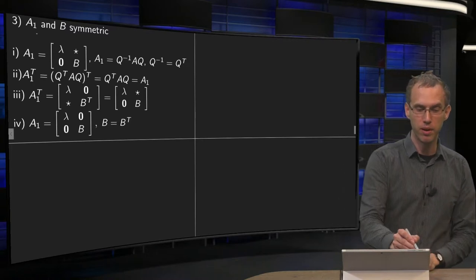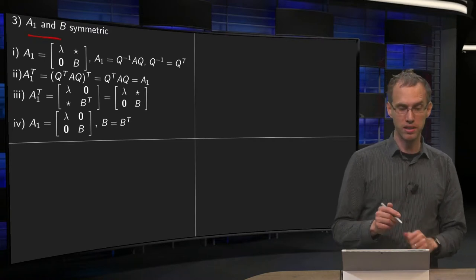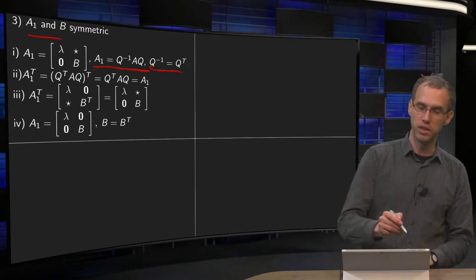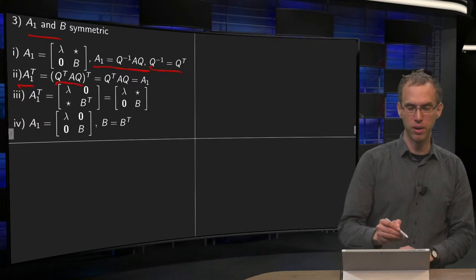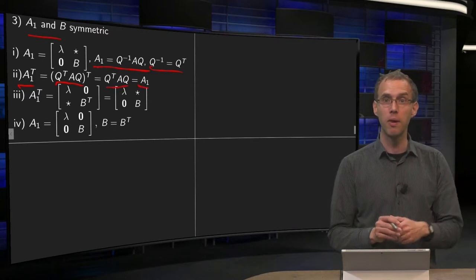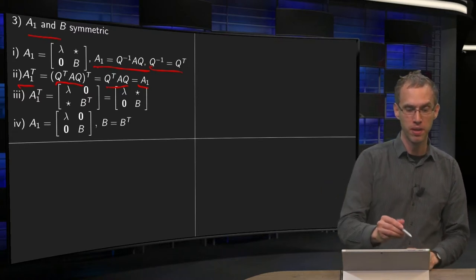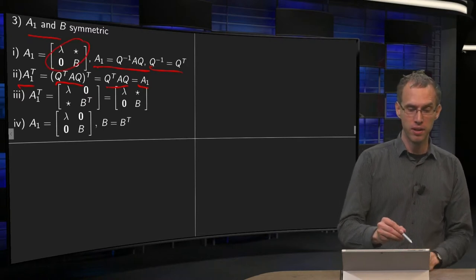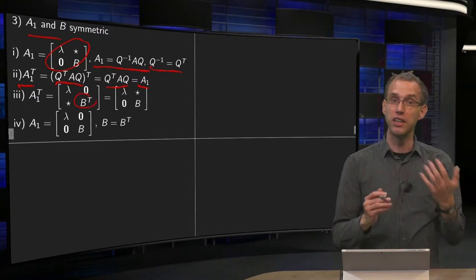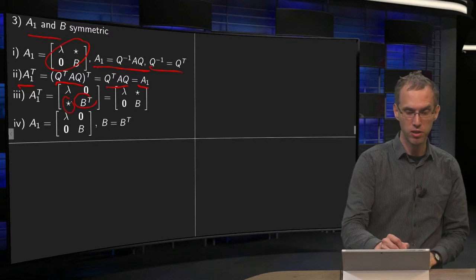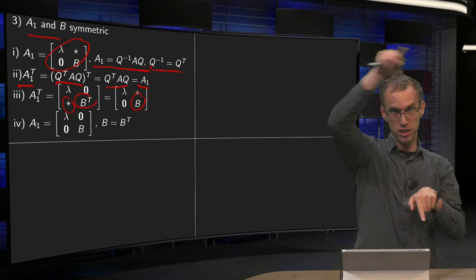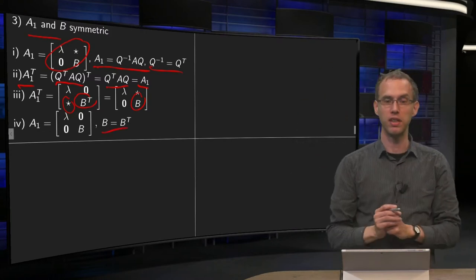Step 3: we show that A1 and B are symmetric. Since A1 = QᵀAQ (with Q⁻¹ = Qᵀ), computing A1ᵀ gives Qᵀ Aᵀ Q = QᵀAQ = A1, so A1 is symmetric. Now if you compute the transpose of A1 in block form, the column of zeros exchanges with the row of stars, and B becomes Bᵀ. Since A1ᵀ = A1, the stars must all be zeros and Bᵀ = B. So A1 has the form: λ in the top-left, zeros elsewhere in the first row and column, and a symmetric k×k block B.